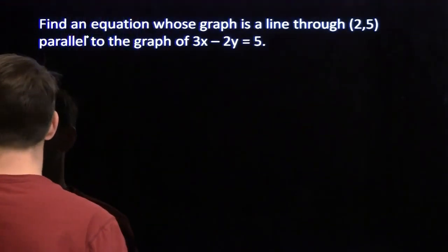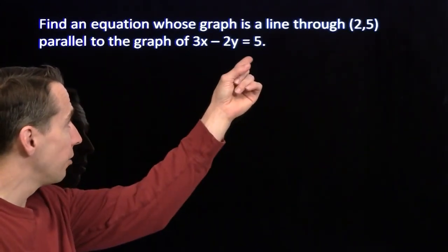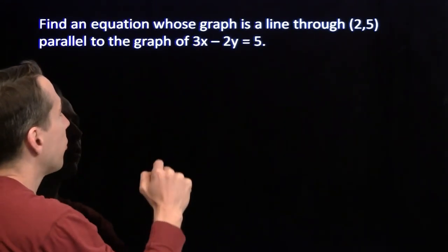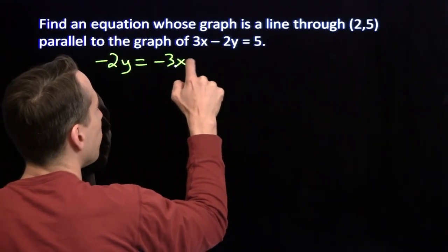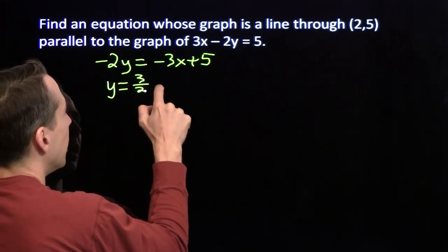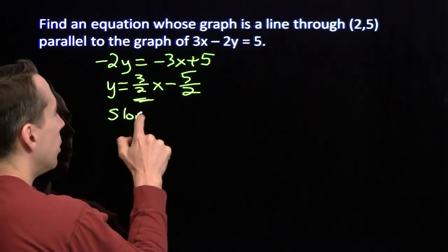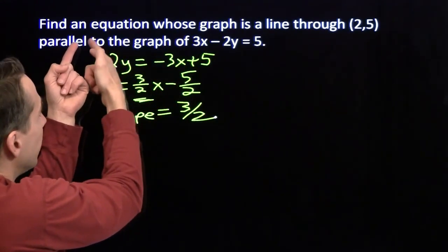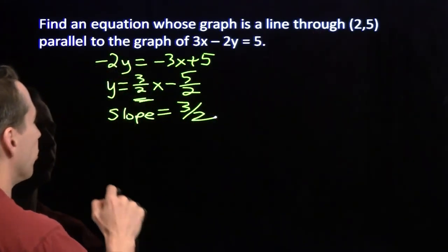I'm going to grab my yellow pen. We're looking for an equation whose graph goes through (2, 5) and is parallel to 3x minus 2y equals 5. Parallel means the slope has to be the same as the slope of this line. We put it in slope-intercept form — subtract 3x from both sides to get negative 2y equals negative 3x plus 5, then divide both sides by negative 2: y equals three-halves x minus five-halves. There's the slope: three-halves. We've got the slope and a point, so we use point-slope form.